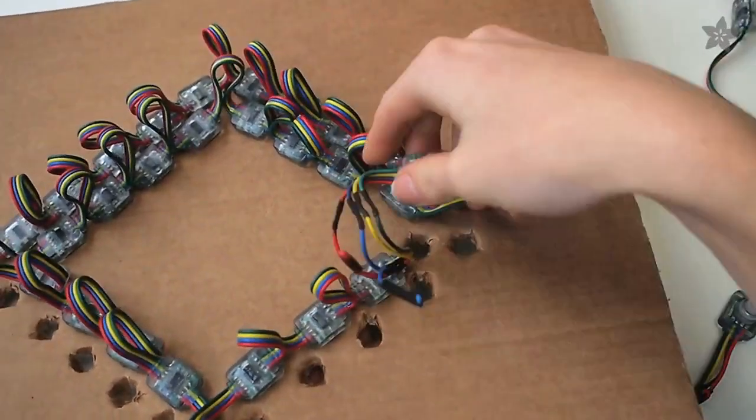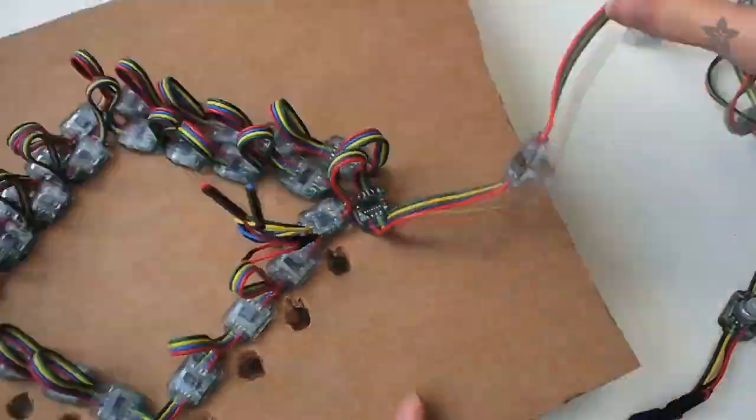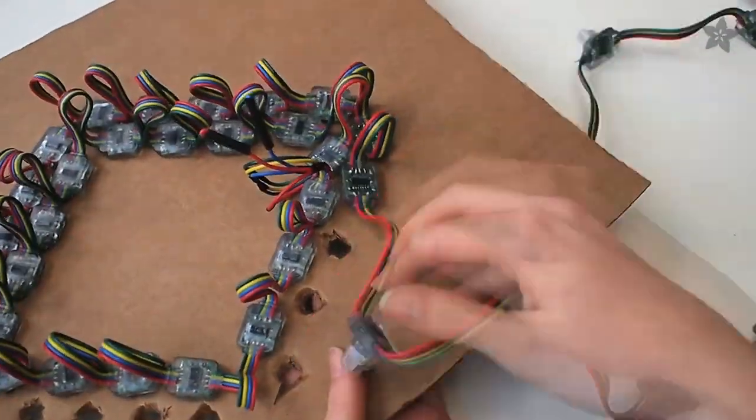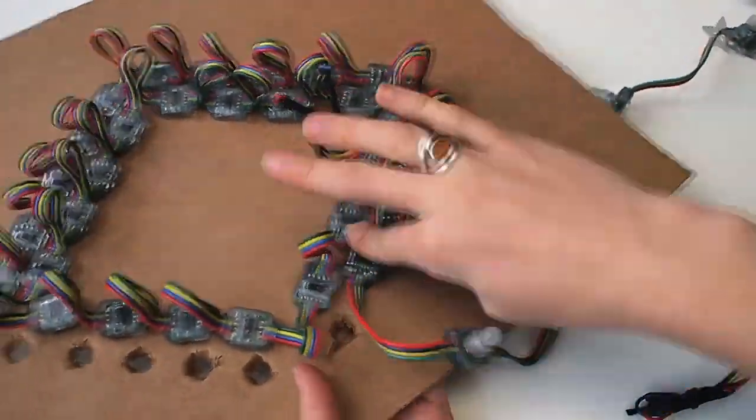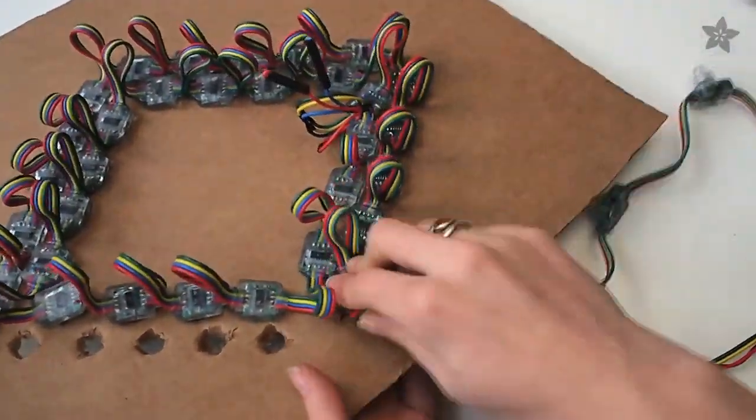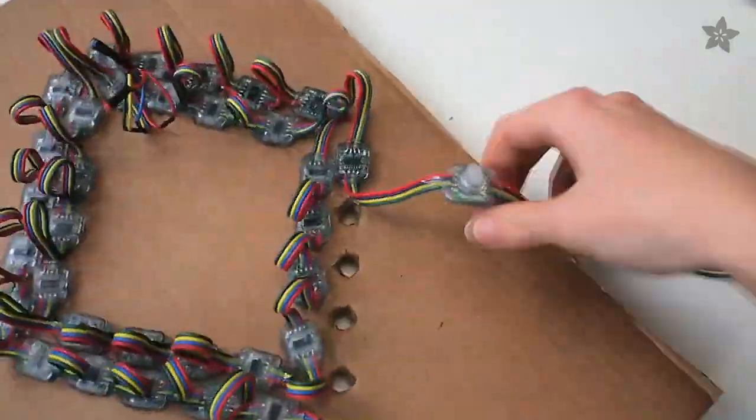These pixels come in strands of 25, so if your design is bigger than that, you'll need to either plug the pixels together with the connectors provided, or cut them off and solder the connections with a lot of heat shrink tubing for an extra weathertight seal.